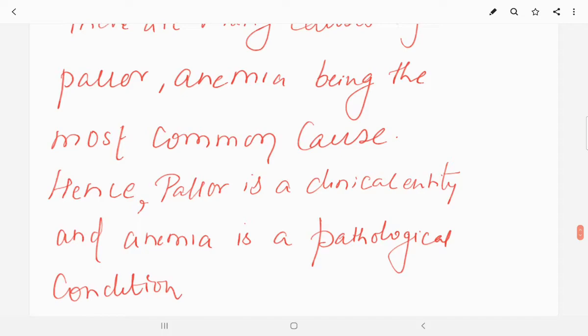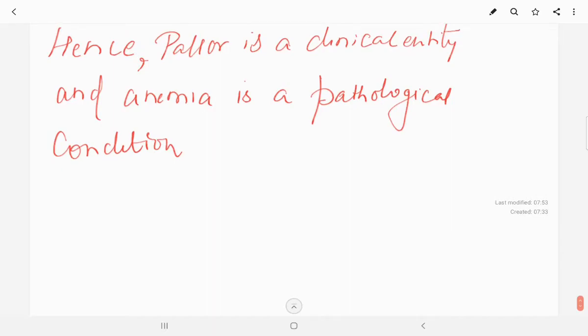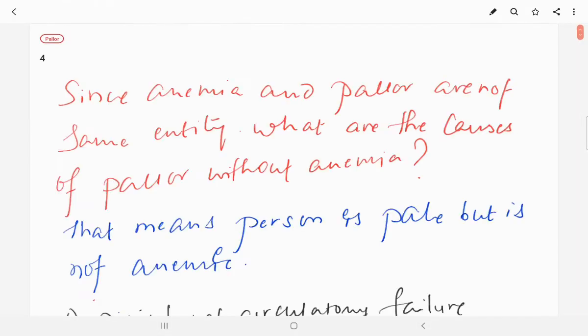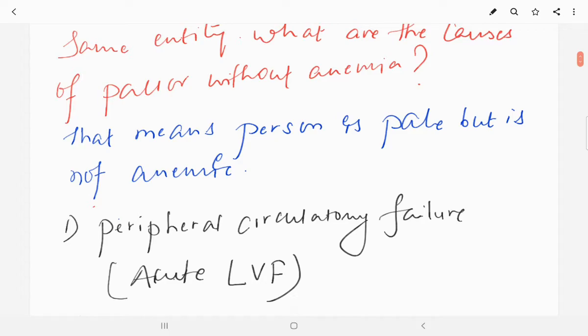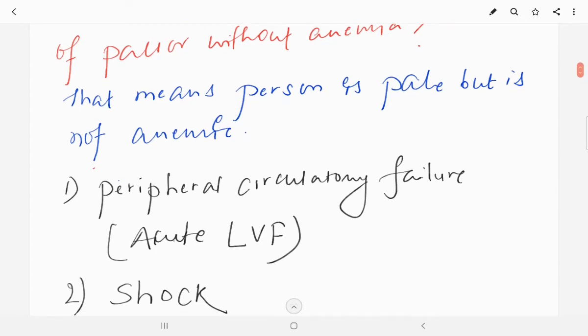We must know that pallor and anemia are not interchangeable terms. There are many causes of pallor, anemia being the most common cause. But remember, pallor and anemia are not interchangeable terms. Pallor is a clinical entity, there are many causes behind pallor, and anemia is a pathological condition which is manifested clinically by pallor.